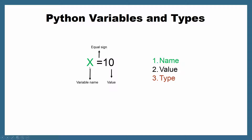As we can see in this example, the variable name is x and the value of the variable is 10. The Python interpreter will figure out the type of the variable based on its value. Since the value of this variable is an integer, the Python interpreter will assign integer type to this variable. If the value is decimal, it will assign another type, and if the value is a string, it will assign another type.